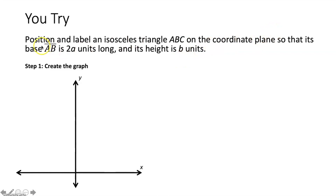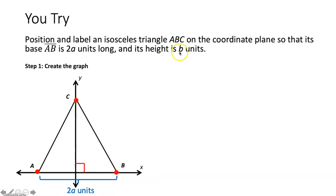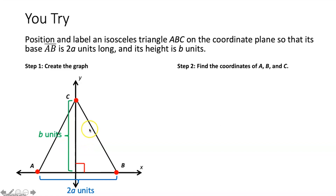From the question, the base is segment AB, so one side has point A and the other has point B, with point C up top — creating the isosceles triangle. The base is two A units long, meaning the distance from point A to point B is two A units. The height is B units, and the distance from point C to our origin is the height of this isosceles triangle, so that distance is B units.